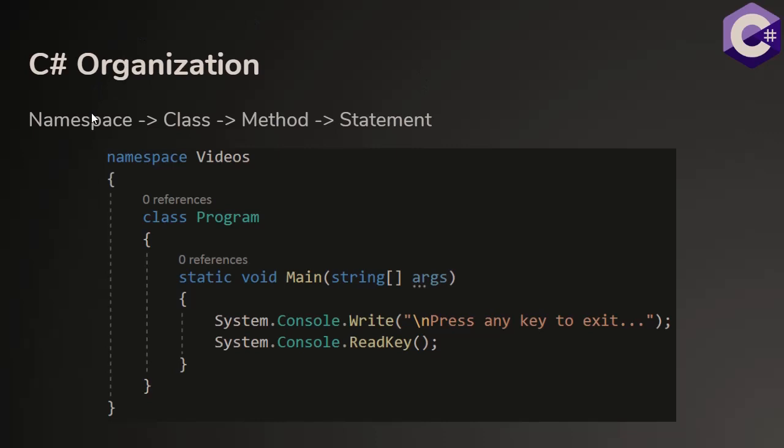C# is organized by namespace, class, method, and statement. A statement is a single line of code ending in a semicolon. A group of statements that solves a task can be put inside a method. A method is a reusable block of code. Methods are stored inside classes. Classes are stored inside namespaces.